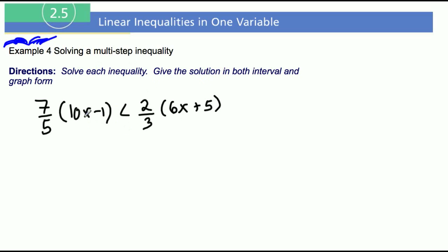So let's see here. What we don't want to do is distribute 7/5 and then distribute 2/3. Let's actually get rid of our denominator, and what you want to do is find the lowest common denominator.